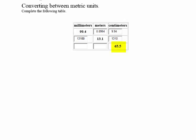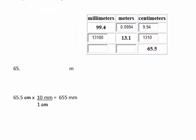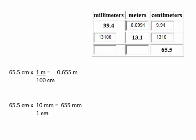Finally, we'll complete the last row by converting 65.5 centimeters to meters and then to millimeters. We begin with 65.5 centimeters times the conversion factor 1 meter over 100 centimeters. The centimeters cancel, and 65.5 divided by 100 gives 0.655 meters. Then, 65.5 centimeters times 10 millimeters over 1 centimeter gives us 655 millimeters.